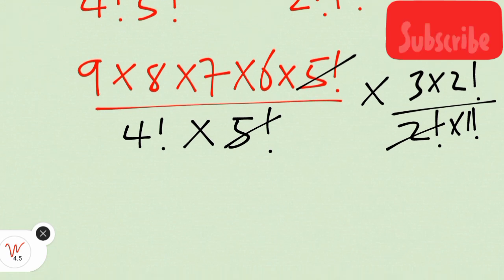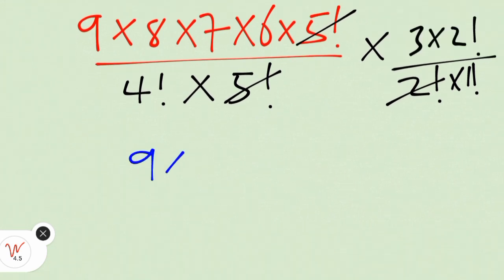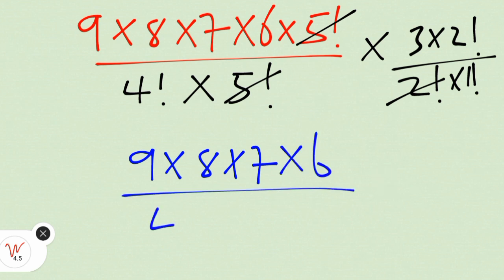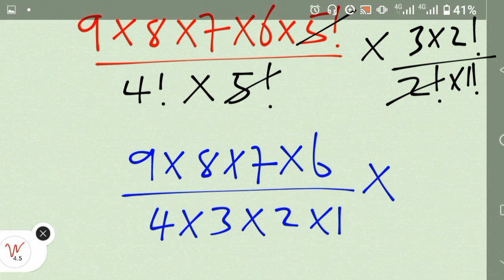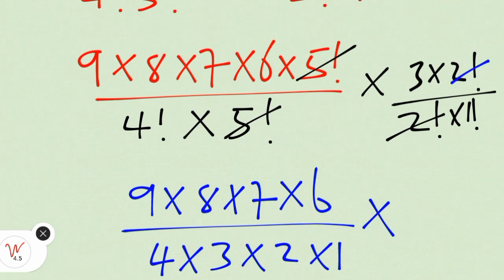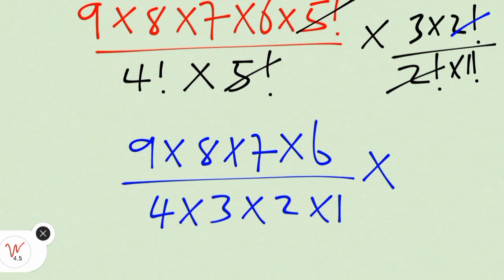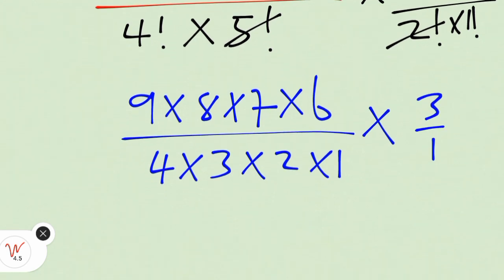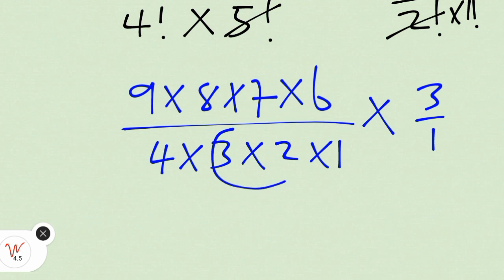Therefore, we are left with nine times eight times seven times six over four factorial, which is four times three times two times one, times three over one. Two times three is six which will cancel the six.